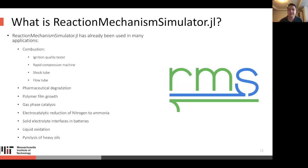RMS has already been used in many different applications. We've used it to model combustion systems and ignition quality testers, rapid compression machines, shock tubes, flow tubes. We've also used it to model pharmaceutical degradation, polymer film growth, gas phase catalysis, electrocatalytic reduction of nitrogen to ammonia, solid electrolyte interfaces in batteries, liquid oxidation, and pyrolysis of heavy oils.